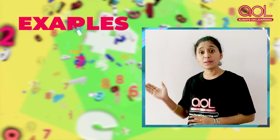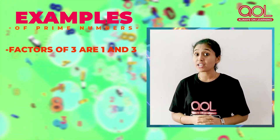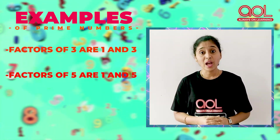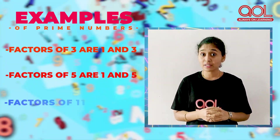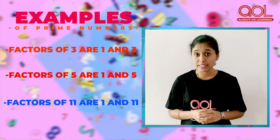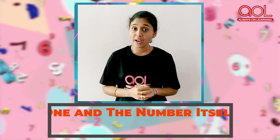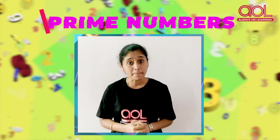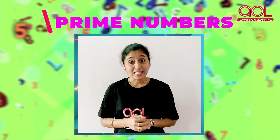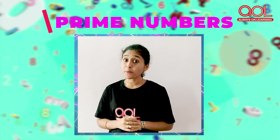So first, let us speak about prime numbers. What are prime numbers? Here come examples. Factors of 3 are 1 and 3. Factors of 5 are 1 and 5. Factors of 11 are 1 and 11. In these examples, we understand these numbers have only two factors — that is 1 and the number itself. So these numbers we call as prime numbers.